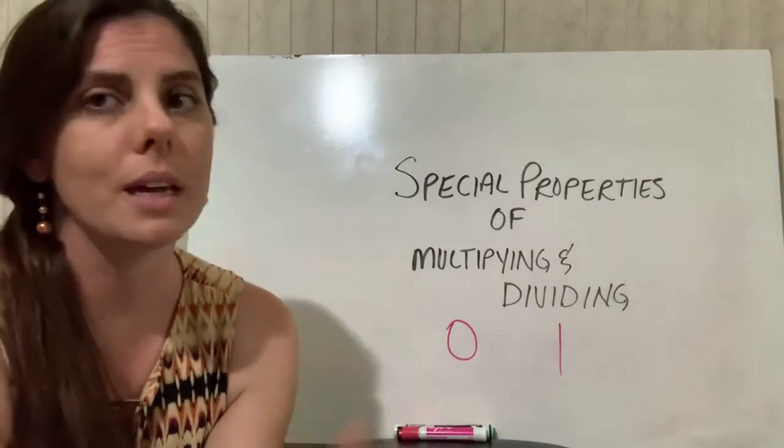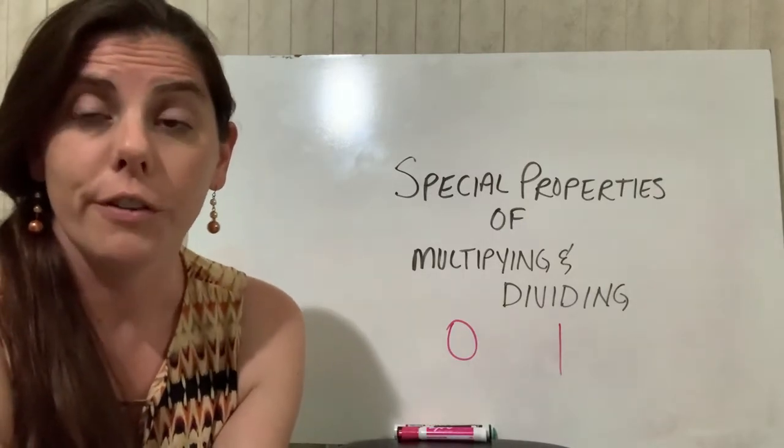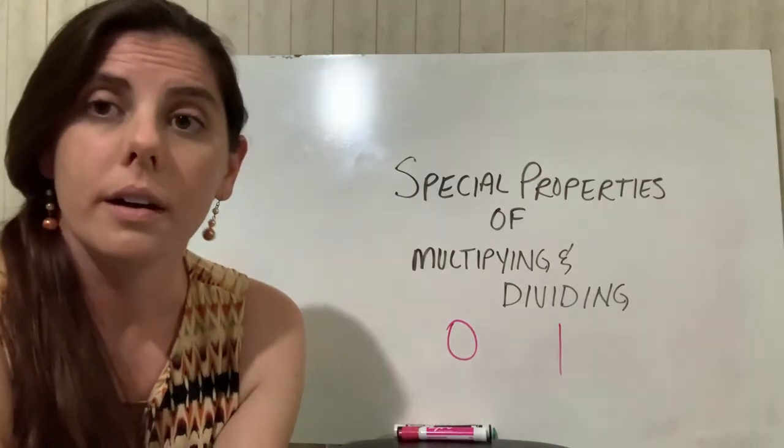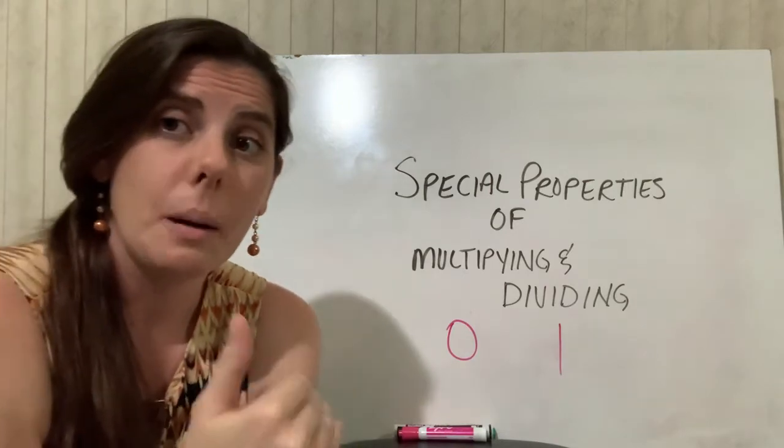And it's the same thing with division. So if you have 58 and you want to divide it by 2, well, you can work through that. But if you have 58 of something and you want to divide it by 0,